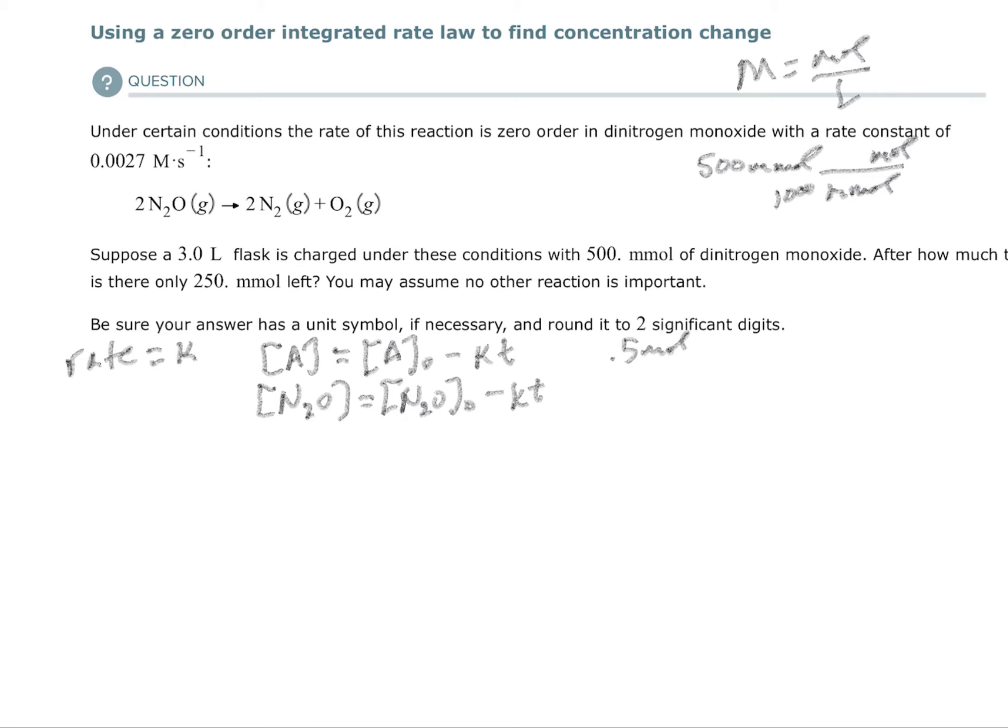At the end I want 250 millimoles. I'm going to do the very same thing—I'm going to divide by a thousand—so at the end I'm going to have 0.250 moles. The molarity you would divide by 3 liters.